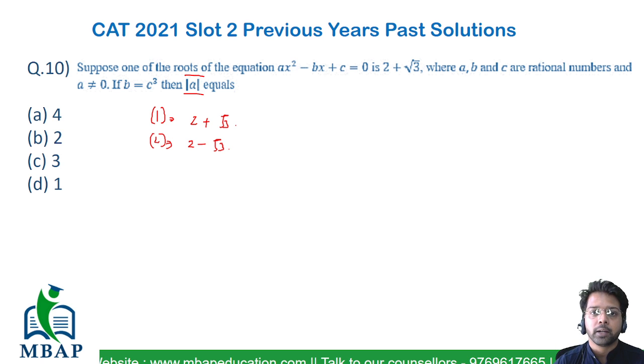The expression is ax² - bx + c. The sum of roots is given by -b/a. Since we have minus of minus b, it becomes plus b. So b/a equals the sum of the roots. Adding both roots gives us 4.